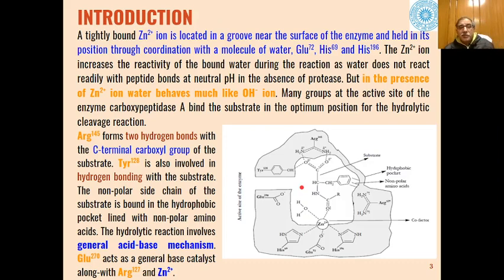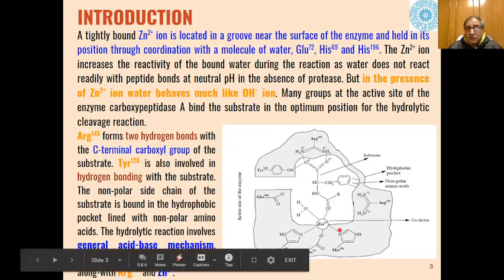Zn2+ ion is located in a groove near the surface of the enzyme and is held in its position through coordination with a molecule of water, histidine 69, histidine 196, and glutamic acid 72. All these active sites present on the enzyme keep this Zn2+ ion at this position in addition to a molecule of water.